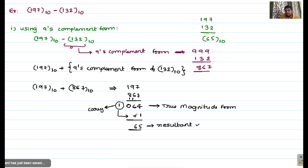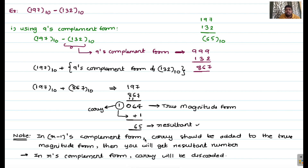For r's complement form: if a carry is generated, simply ignore it. To summarize: in r-minus-1's complement form, the carry should be added to the true magnitude to get the resultant. In r's complement form, the carry is simply discarded. Both approaches give the correct resultant number.